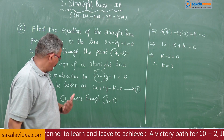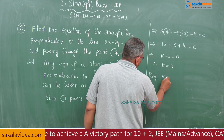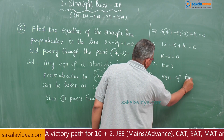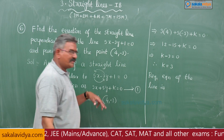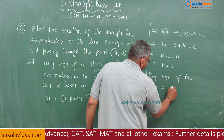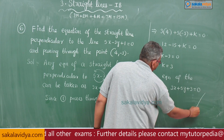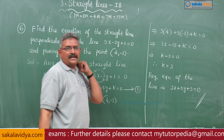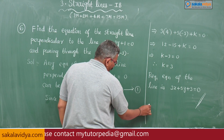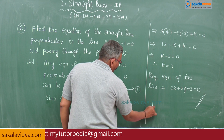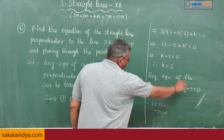The required equation of the line from equation 1 is 3x plus 5y plus 3 is equal to 0. We can check our answer: substitute 4 comma minus 3 — that gives 12 minus 15 plus 3, which equals 0. So our answer is correct.